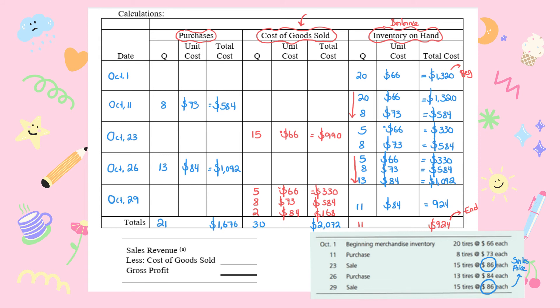Now let's find the gross profit using FIFO. Sales revenue minus cost of goods sold equals gross profit. We had two sales transactions — 15 units on the 23rd and 15 units on the 29th — both at $86, so total sales revenue = 30 × $86 = $2,580. Cost of goods sold is $2,072. So gross profit = $2,580 − $2,072 = $508.